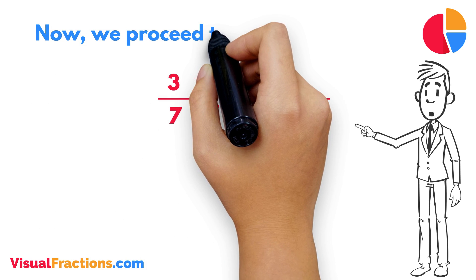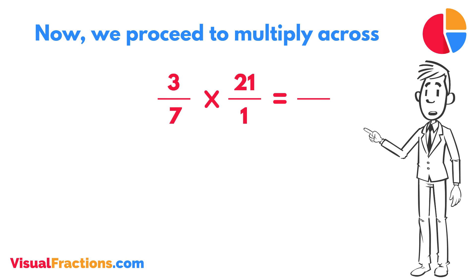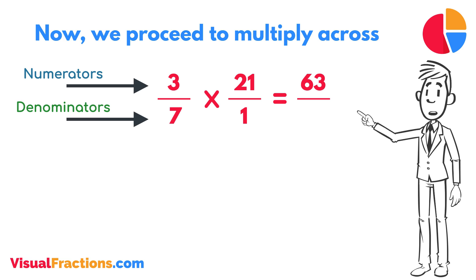Now, we proceed to multiply across. First, multiply the numerators: 3 times 21 equals 63. Next, multiply the denominators: 1 times 7 equals 7. We now have a new fraction, 63/7.